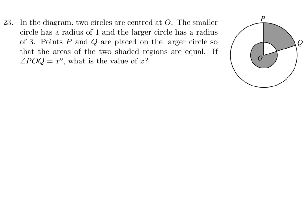In the diagram, two circles are centered at O. The smaller circle has a radius of 1 and the larger circle has a radius of 3. Points P and Q are placed on the larger circle so that the areas of the two shaded regions are equal. If angle POQ is X, what is the value of X?